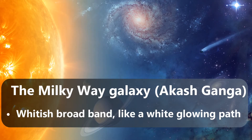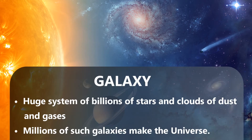Have you seen the whitish broad band-like glowing part across the sky on a clear starry night? It is a cluster of millions of stars. This band is the Milky Way galaxy, also called Akash Ganga. A galaxy is a huge system of billions of stars and clouds of dust and gases. These millions of galaxies make the universe.